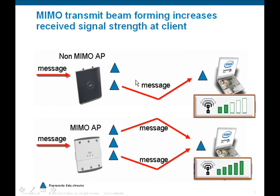Now on the transmit side for the client, the AP-1240 is sending one copy of that signal out of one transmitter, whereas the AP-1250 is transmitting on multiple antennas, creating a much stronger receive signal at the client.